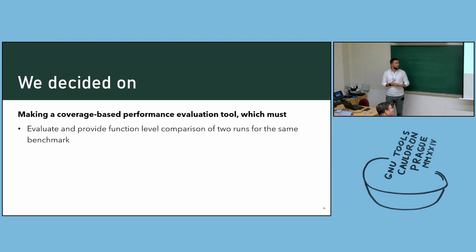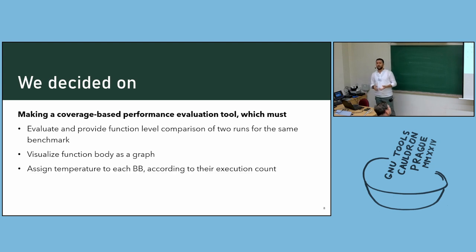So we decided to make some coverage-based performance evolution tool, which must evaluate and provide function-level comparison of two runs for the same benchmark. I mean for the GCC and CLANG. For better understanding control flow, we need to visualize our graphs, and in order to understand which part is most important, we need to somehow colorize each basic block according to their execution count. At the end, we need to somehow integrate our system in a CI-CD system to make automatic workflow.